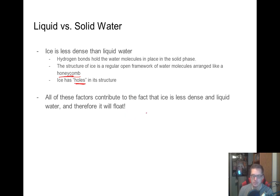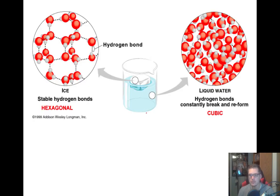Because ice has holes in it, it's less dense — that's why ice floats. Because ice is less dense, things aren't as close together, and so the ice will float on the liquid water. It also explains why water expands as it freezes: it's literally taking up more space for the same number of molecules. In liquid water, the molecules constantly break and reform with one another and are generally cubic shaped, so they're a lot closer together and a lot more dense.